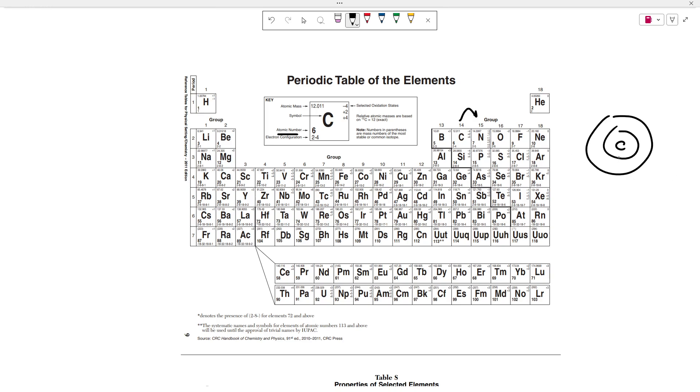If you take away one proton, you'll be left with boron because you're subtracting one from the atomic number. What I'm trying to get at here is that the protons, the number of protons, determine the type of element you have.